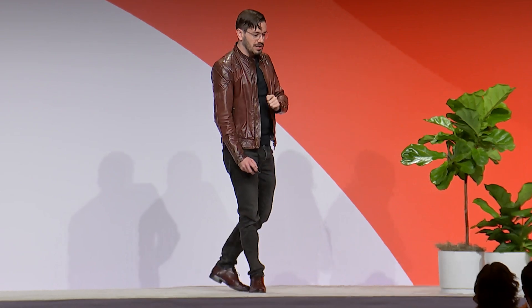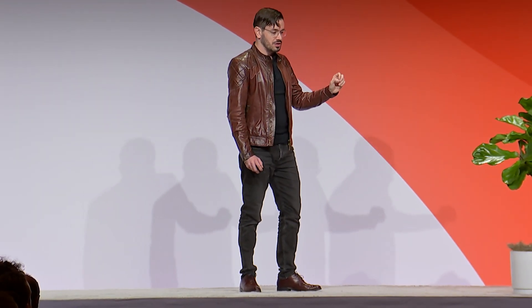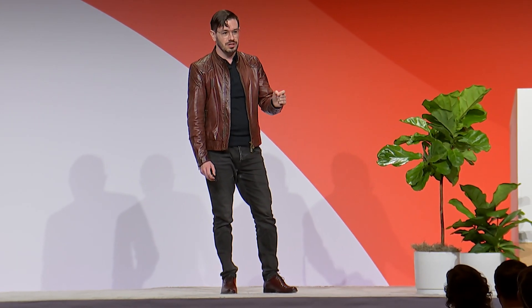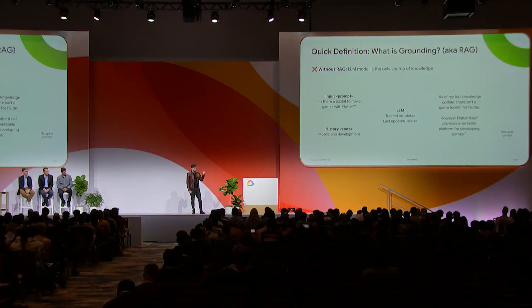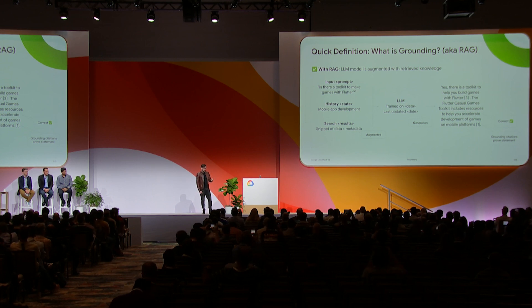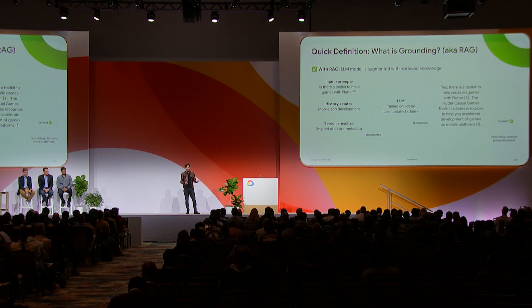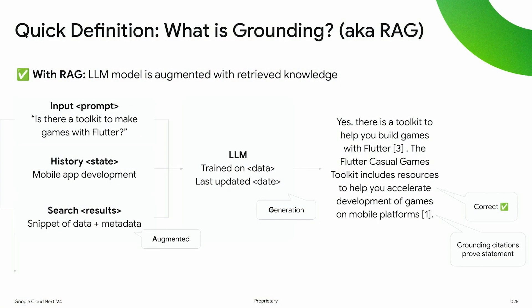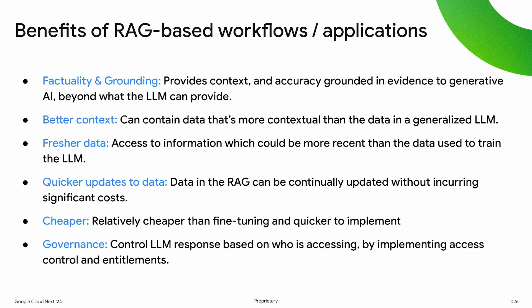For anyone who is not familiar — what is grounding or RAG? Without retrieval augmented generation, your LLM model is the only source of knowledge, which is where hallucination comes from — it depends on what it was trained on, the tuning, and the prompt context available to it. With RAG or grounding, we are augmenting the retrieval of knowledge for the LLM to have sources and citations, helping focus it to return an appropriate answer for the information we're trying to retrieve. The benefits: factuality and grounding are improved immensely. You get better context, fresher data, quicker updates since you can update your RAG sources without retraining the model, it can be cheaper than retraining entire models, and your governance around the control of the LLM becomes more controllable.